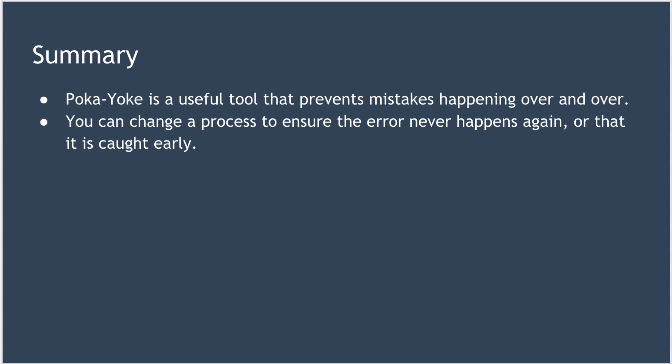In summary, as humans do make errors from time to time, it's useful to have a tool that prevents frequent occurrences of a mistake happening over and over. Using a Poka-Yoke, you can change a process to ensure the error never happens again, or at the least it's caught early. Next time you consider how a process could be improved — either at home or in the workplace — consider ways you might go about introducing a Poka-Yoke. That's it for this lesson; really hope you enjoyed it, and I look forward to speaking to you again soon.